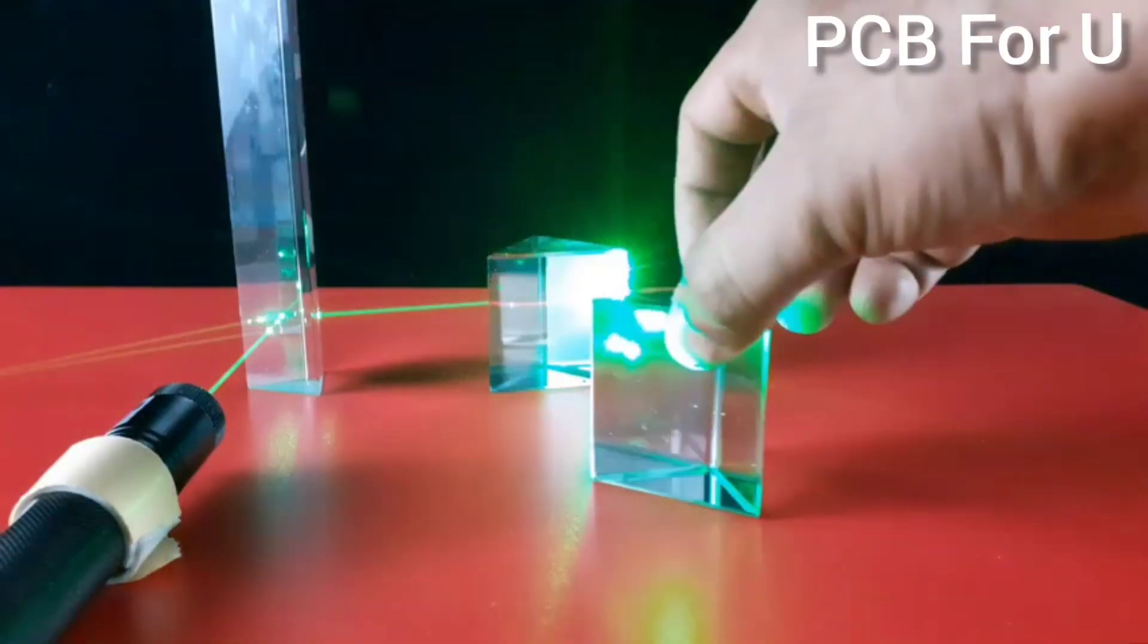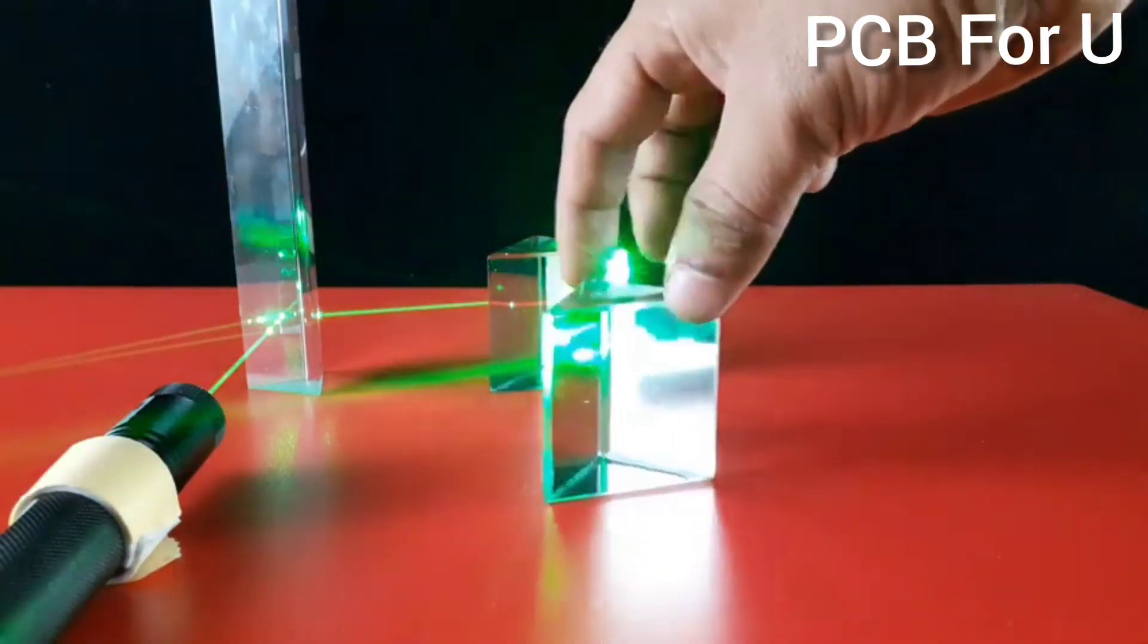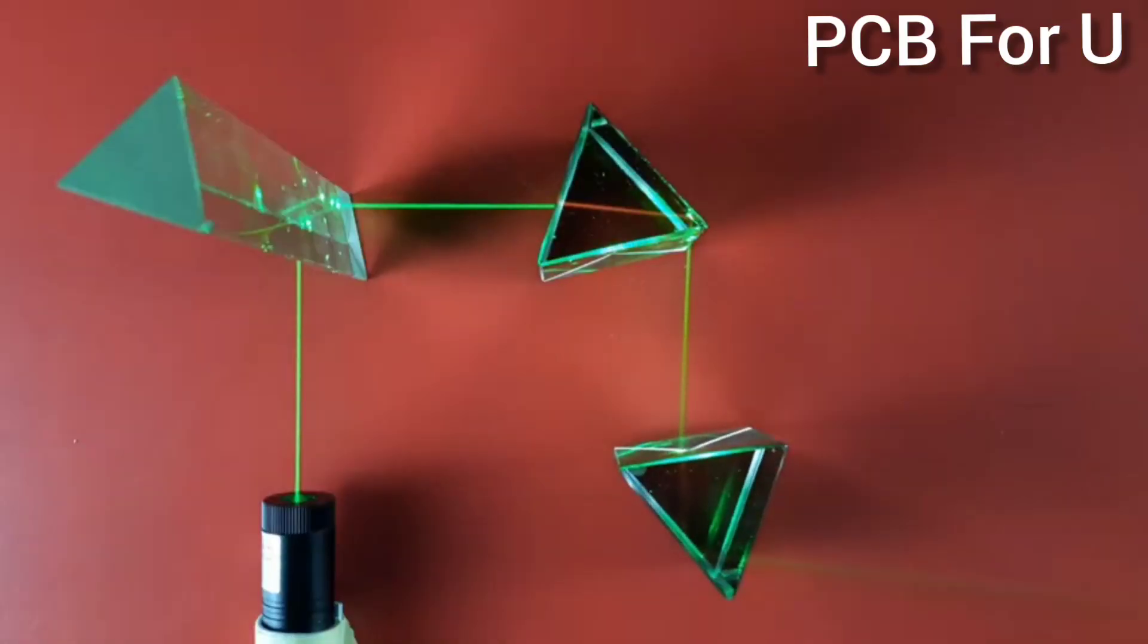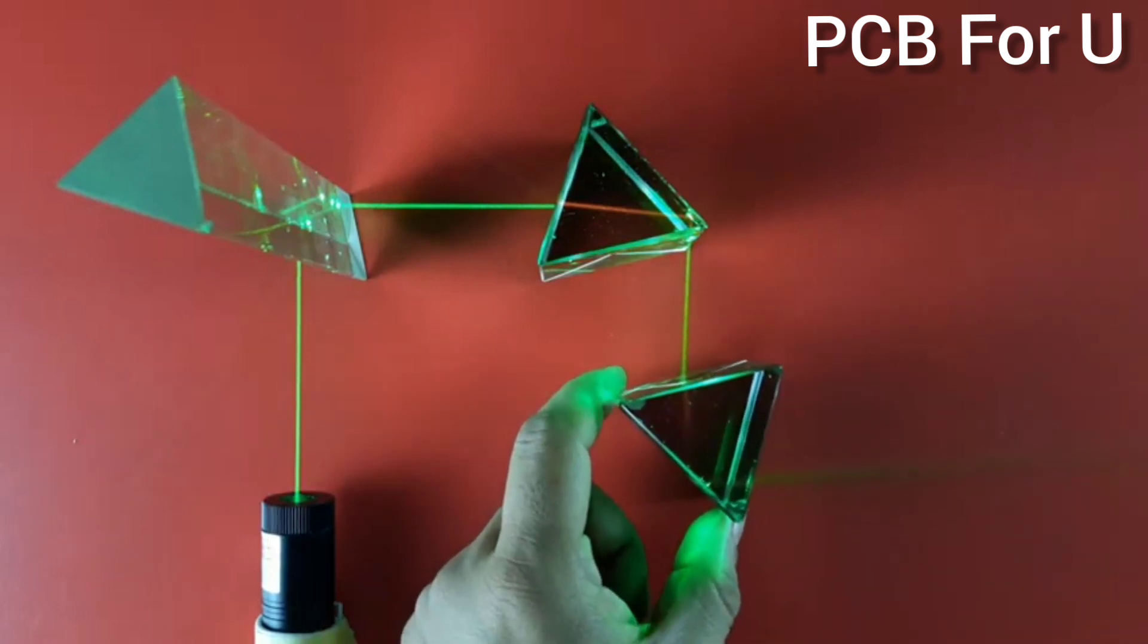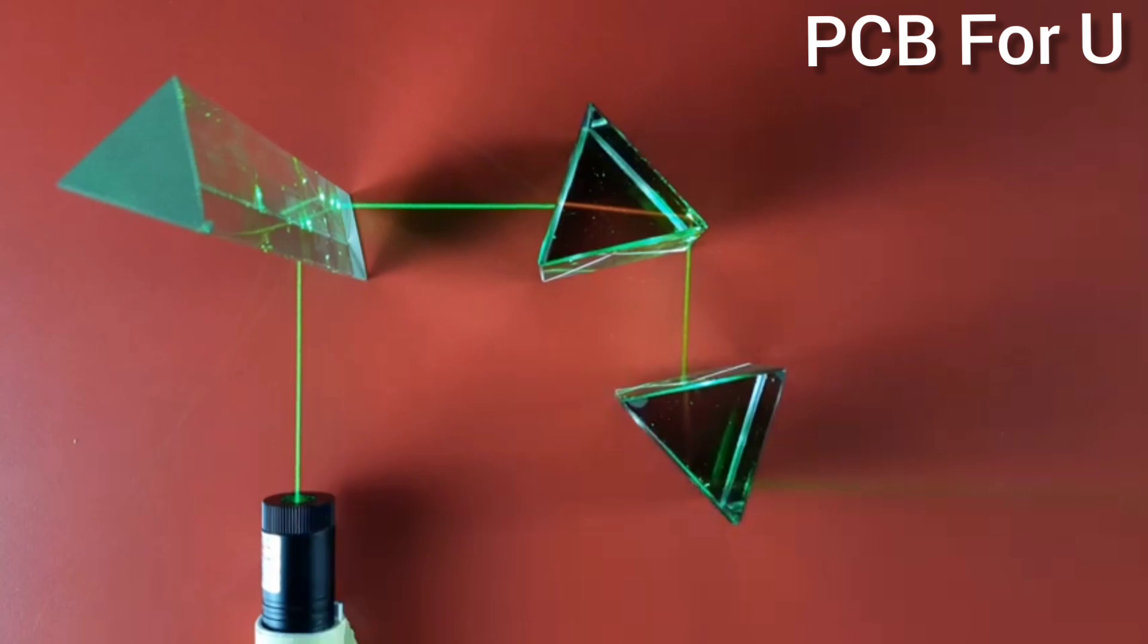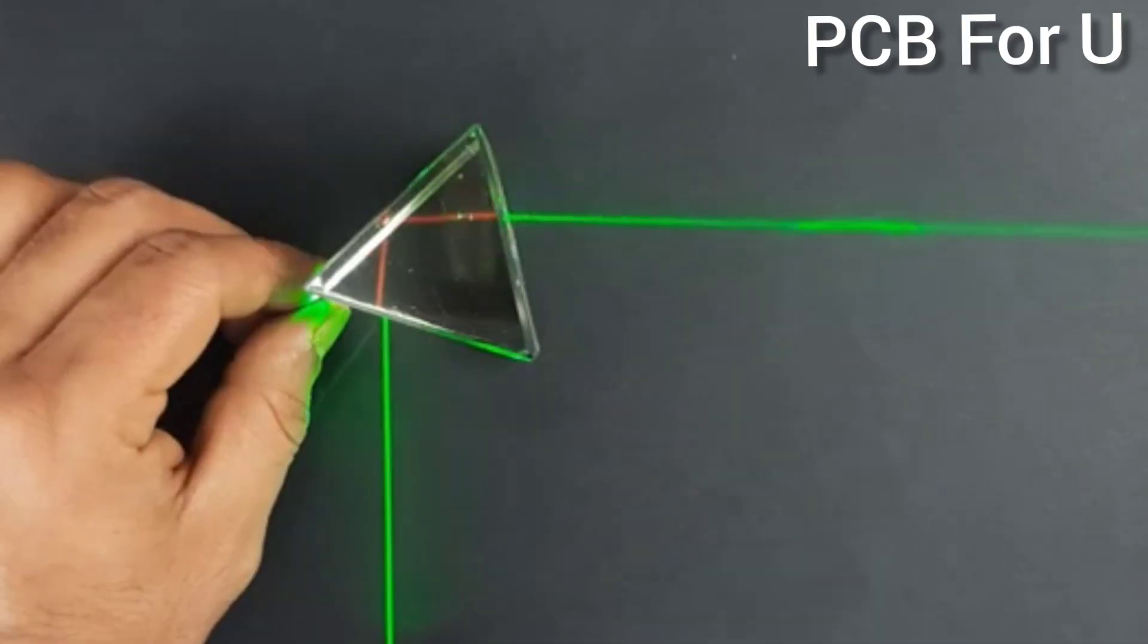So this is 180 degree reflection with the help of two prisms. We place another one, that is the third prism. In suitable position, we can get 90 degree from each and every prism.